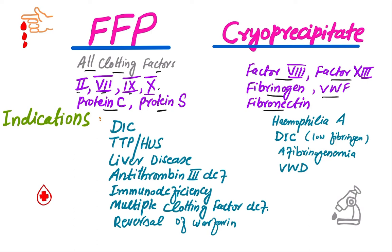The indications for fresh frozen plasma include disseminated intravascular coagulation, thrombotic thrombocytopenic purpura, hemolytic uremic syndrome, liver disease, antithrombin-3 deficiency, immunodeficiency, multiple clotting factor deficiency, and reversal of warfarin in cases of warfarin overdose.